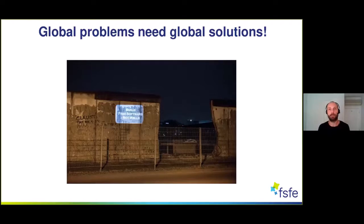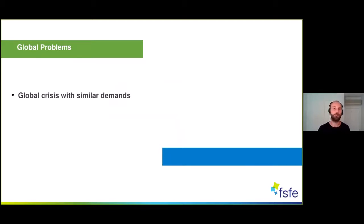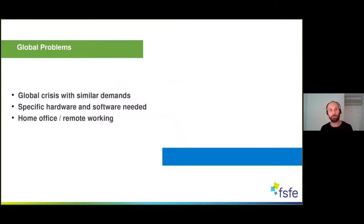Let's have a specific look at the Corona crisis, which showed us very clearly why free software is a solution, especially when it comes to software meant to tackle a crisis. We've seen during the Corona crisis that there is a global problem — and this global crisis comes with similar demands all over the world. The crisis is more or less the same everywhere. We need specific software to tackle it. Especially around home office and remote working, there were loads of issues at the beginning. And around tracing apps, debates showed us very clearly that the solution can only be free software when it comes to worldwide, global solutions.